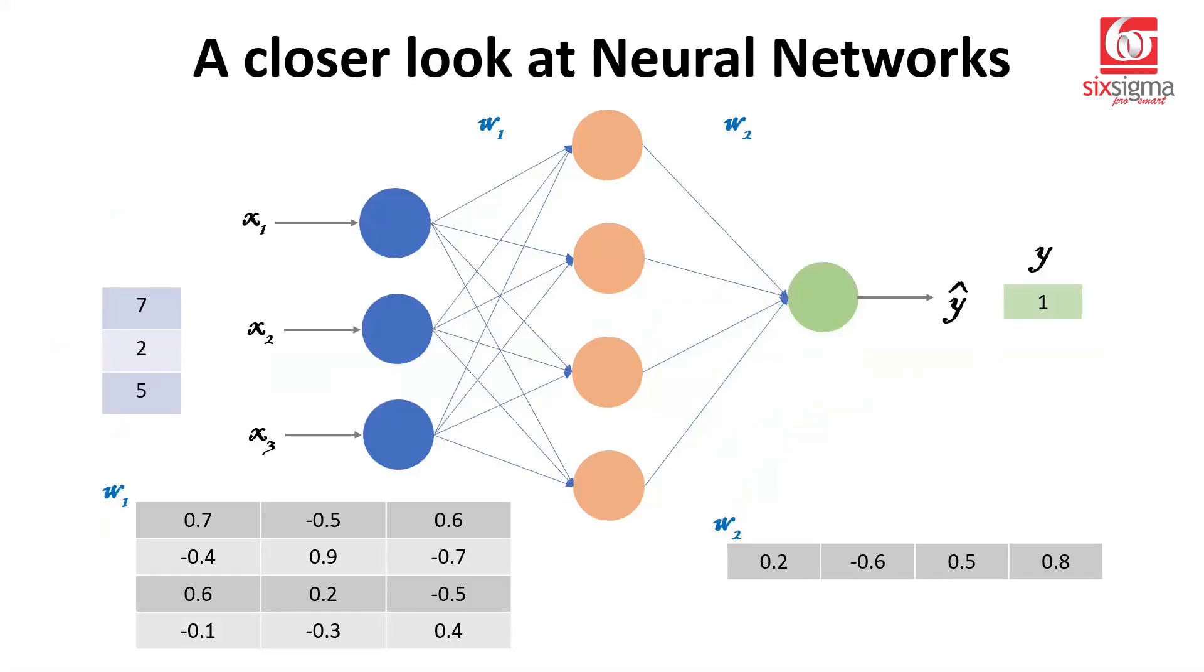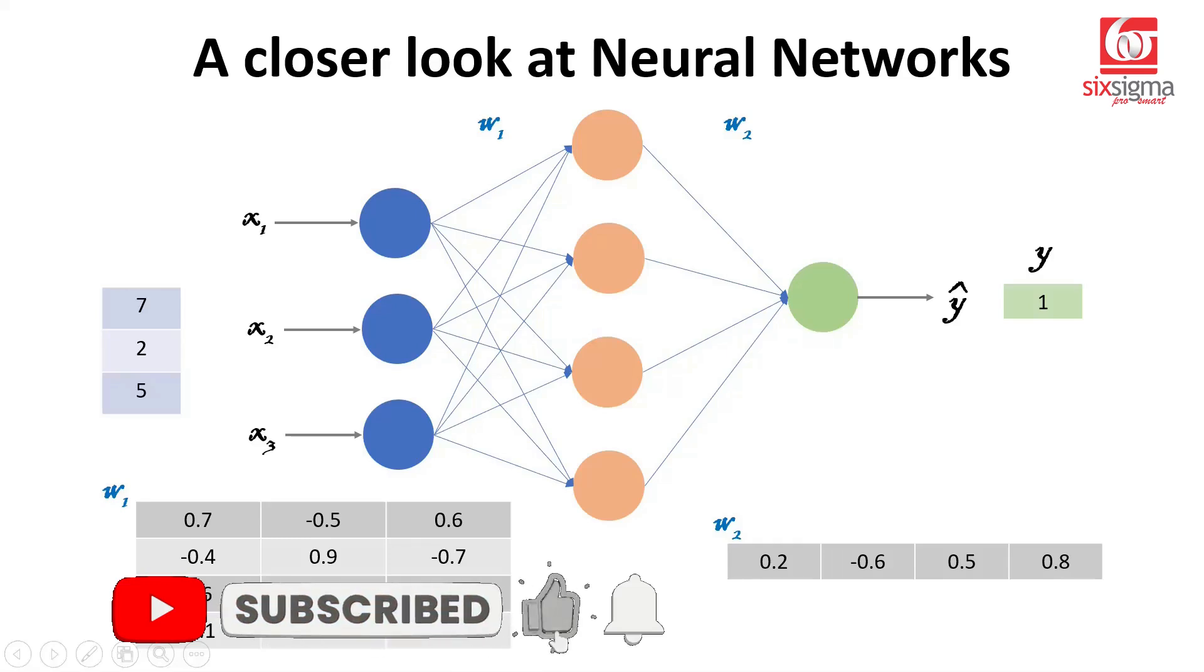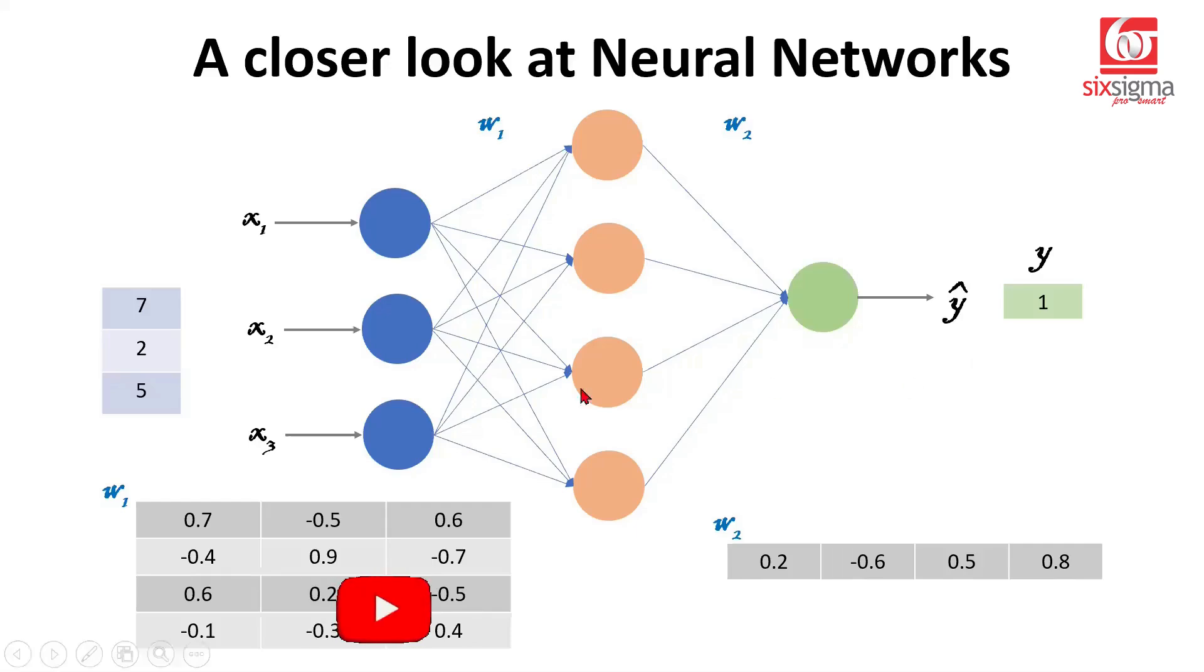In a previous video, we completed the forward pass in neural networks, deriving the y-hat predicted probability value through matrix multiplication and activations. In this video, as promised, we'll move to part two: backpropagation, which involves tracing backwards from the loss to weight updation. To explain these concepts simply, our focus will be on updating one particular weight. Once we understand that well, we'll have a good understanding of how weights and biases get updated.